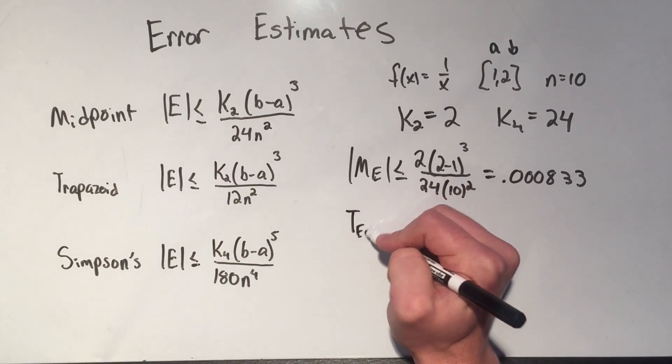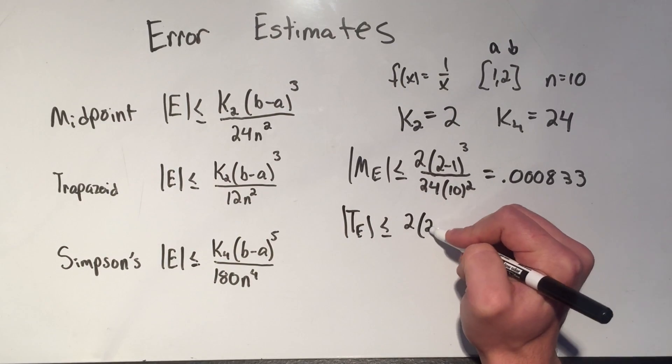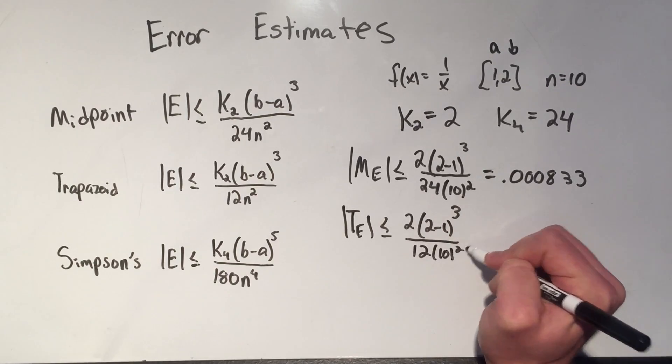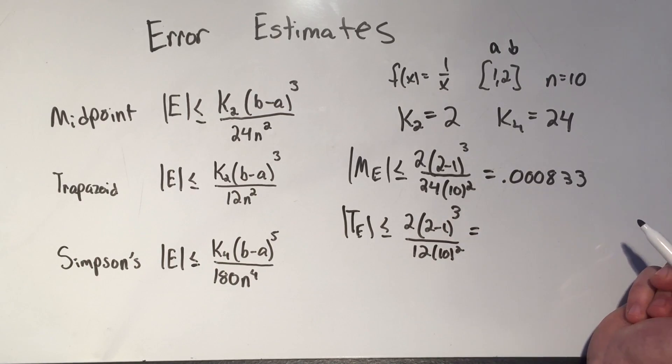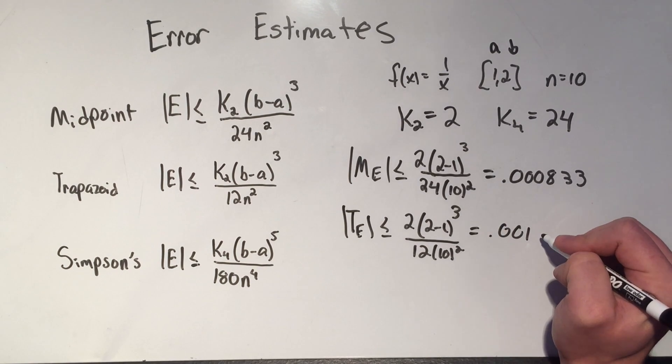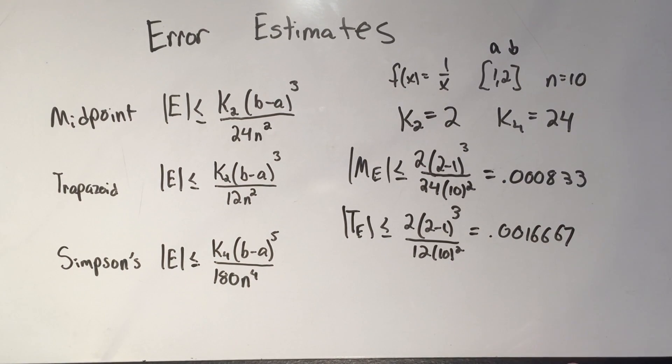Let's do the trapezoid error. So my trapezoid error, that's k₂, that's 2, b minus a cubed over 12n². If you plug that into a calculator, you're going to get 0.0016667. So not quite as good as the midpoint in this case. So depending on what rule you use for different functions, one approximation might be better than another, but in this case, this would be the error for the trapezoid rule.